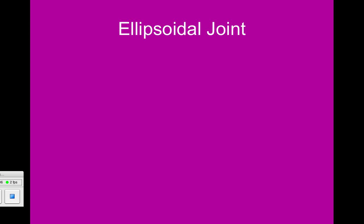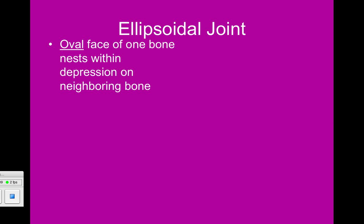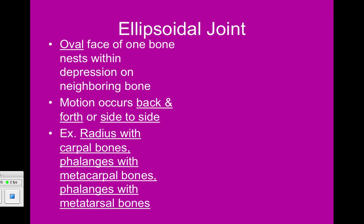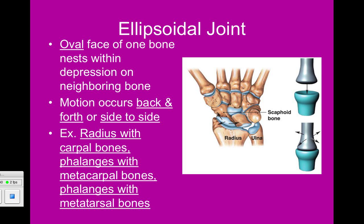An ellipsoidal joint has an oval face of one bone that nests into a depression in a neighboring bone. Motion occurs back and forth and side to side. For example, taking your pointer finger, you can go front to back and side to side. This joint type is found where the phalanges meet the metacarpals, the phalanges with the metatarsals, and between the radius and carpal bones — since your wrist can go back and forth and side to side.